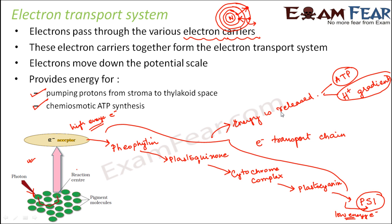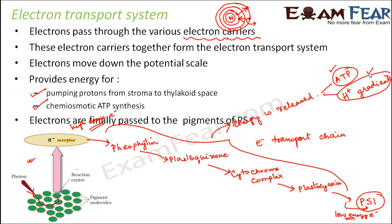So till now we are clear with two steps. First step: light falls on PS2 and electrons get excited to the primary acceptor. Second step: the electrons pass through a series of electron carriers which together form the electron transport system, and during this process a lot of energy is released. This energy is utilized for ATP synthesis and creation of a proton gradient. Finally, the electrons are passed to the pigments of PS1.